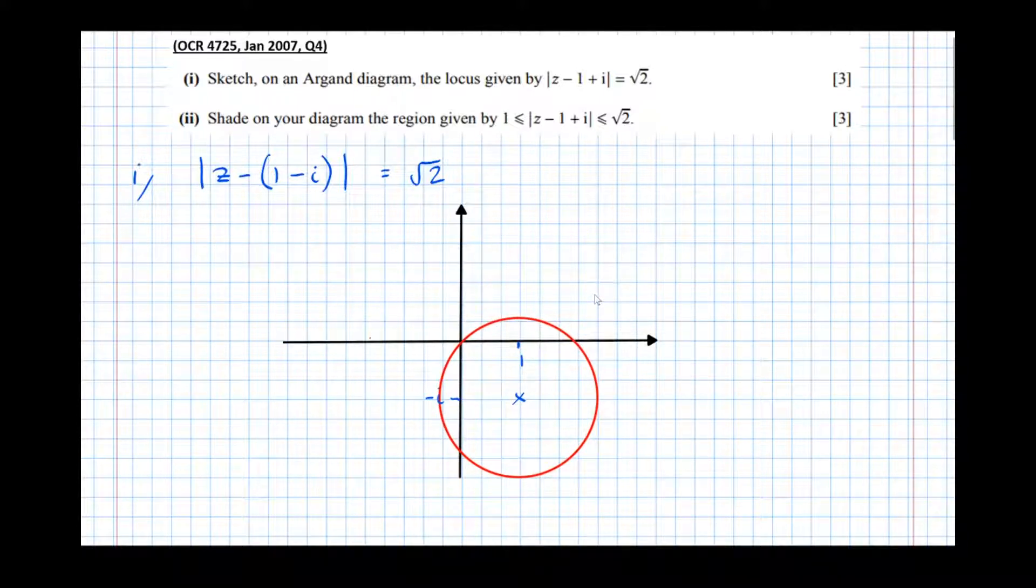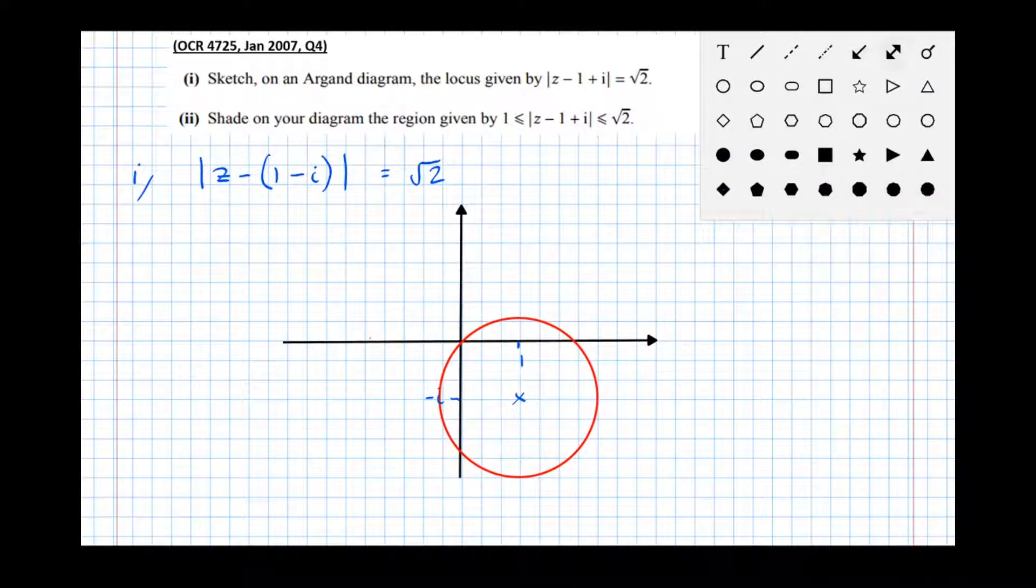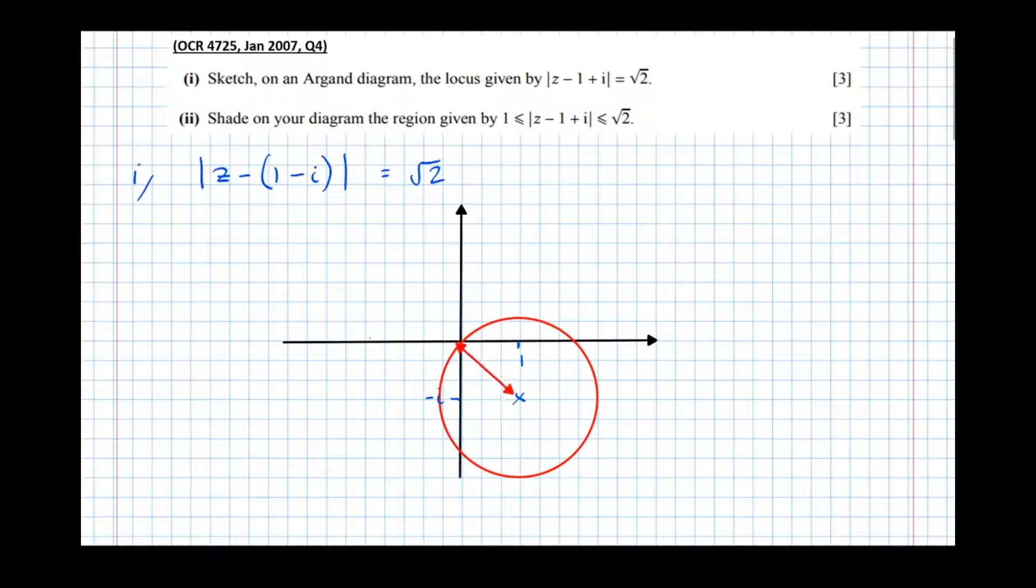So the center is 1 - i which I've marked on the diagram and marking the key features, I should really mark that this distance here, the radius, is √2. So I've got all the key features on that diagram. So that's that done.